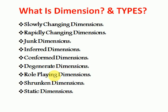Role playing dimensions means, for example, if you have columns like ship date and order date in your fact table, both dates will be using different foreign keys but pointing to the same date dimension table with different roles — one is ship date, another is order date or delivery date. So when the same dimension table is used for different requirements, that is called a role playing dimension, because the same dimension plays different roles — order date, delivery date, ship date — in the same fact table.